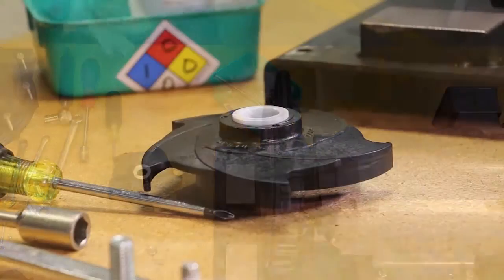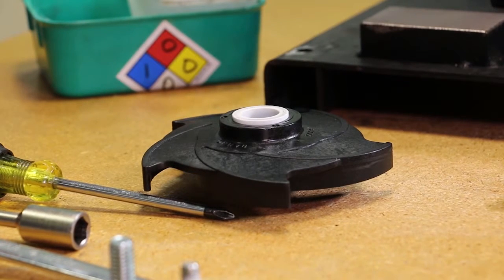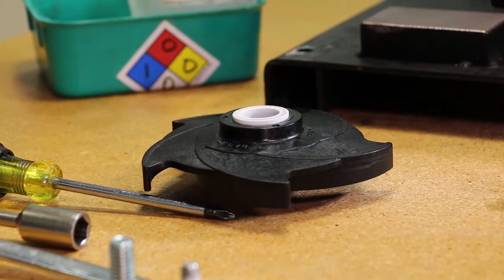It's important to be absolutely sure that the ceramic seal half is bottomed out and installed squarely. If the installation is not square, seal wobble will occur, leading to premature seal failure.